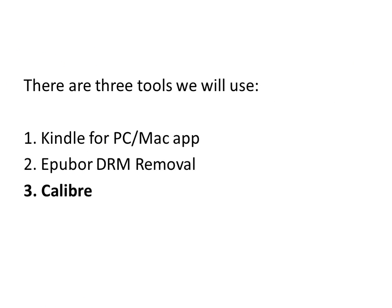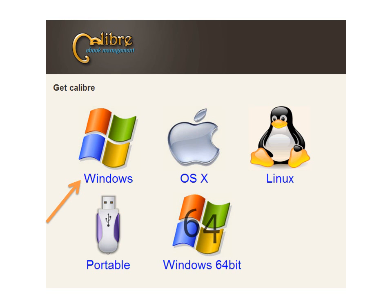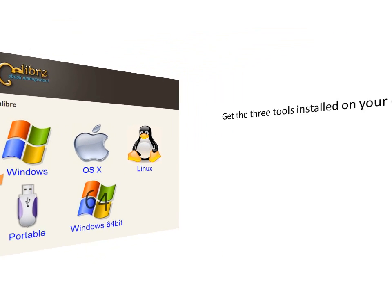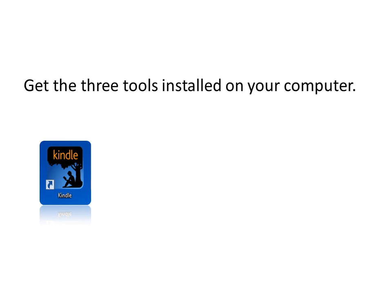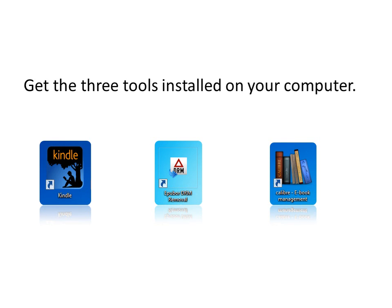The third one is Calibre. Here is the download link. Select a version according to your computer and download. Get the three tools installed on your computer: Kindle for PC, EPUB DRM Removal, and Calibre.